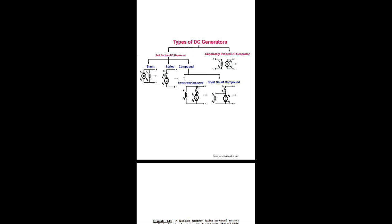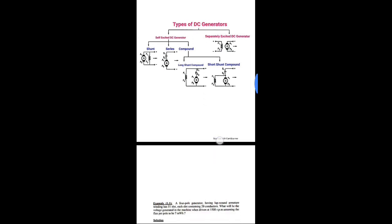There are two basic types of DC generators: self-excited and separately excited. Self-excited is further classified into three types according to field excitation. If the field winding is in parallel, it is called shunt. If in series, it is a series DC generator. Compound types are long-shunt compound and short-shunt compound — in long-shunt, both series and armature are connected in parallel with the field winding; in short-shunt, only the series field winding is outer.